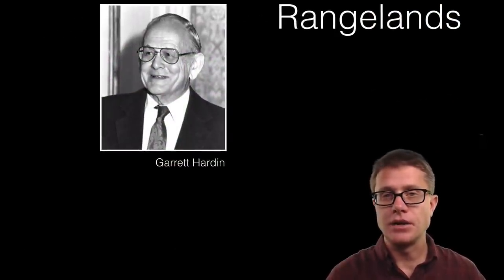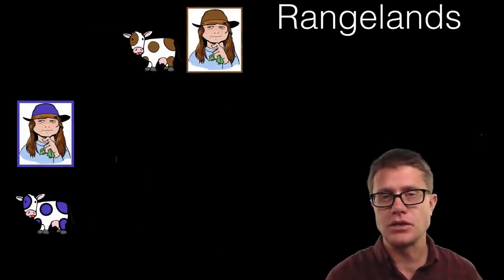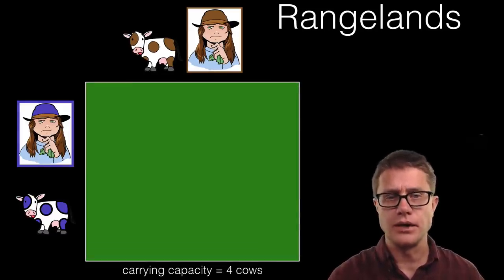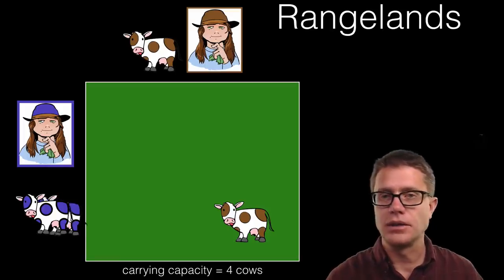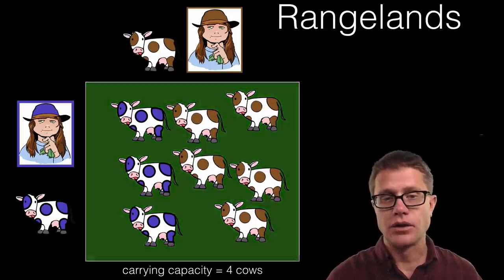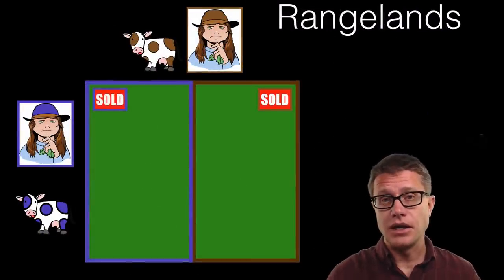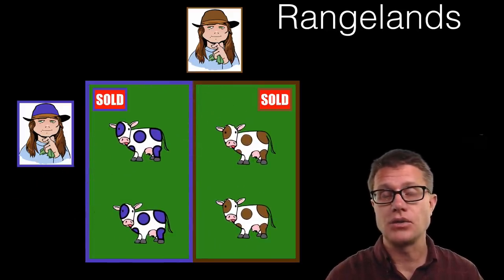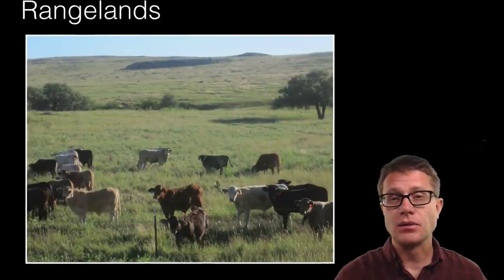Moving to rangelands, a common idea is the tragedy of the commons, put forth by ecologist Garrett Hardin. Imagine two ranchers with cows and a public commons next to them that no one owns. One rancher puts a cow out there, and let us say the carrying capacity is four cows. Another rancher puts a cow out, then doubles it, and all of a sudden there are too many cows — overgrazing — and it is bad for everybody. One solution is ownership: if they each own a portion, they will not overgraze because they want it productive into the future. Or the government could come in and set limits, allowing only two cows per rancher on that area.